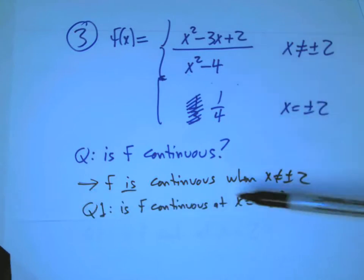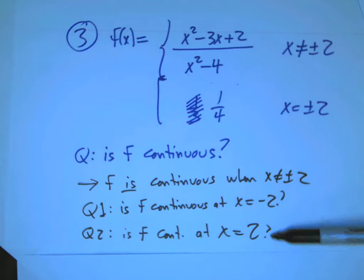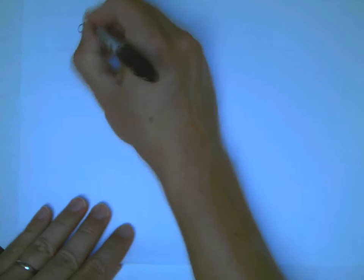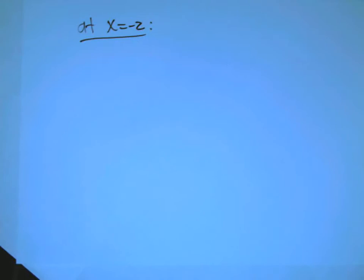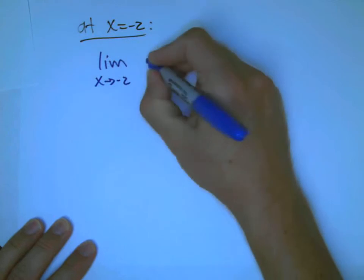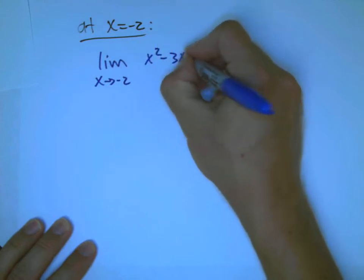So that means that the interesting questions are, what about minus 2? Maybe it's continuous there, maybe not. What about plus 2? Maybe it's continuous there, maybe not. So let's look first at, let's use this piece, at x equals minus 2. At x equals minus 2, the way you carefully do this is you look at the limit as x goes to minus 2 of this function.